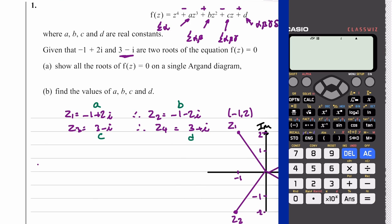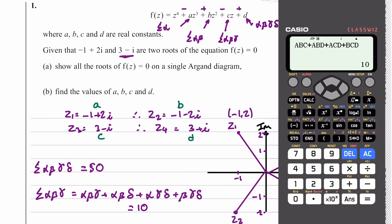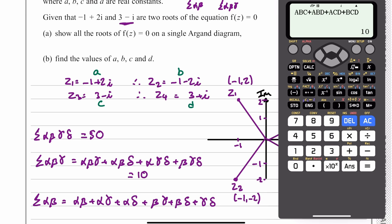Now to work out the product of the four roots alpha beta gamma delta, we just need to press a times b times c times d, and this gives us 50. We can work out the sum of alpha beta gamma, so we'll enter a b c plus a b d plus a c d plus b c d, and this gives us 10. Then the sum of alpha beta will be a b plus a c plus a d plus b c plus b d plus c d, and this gives us 3.